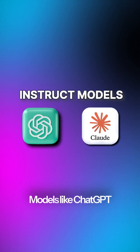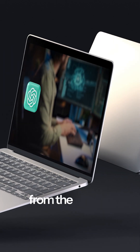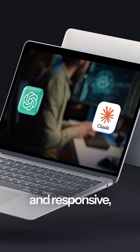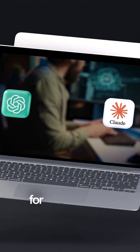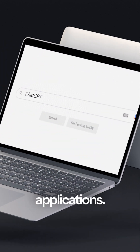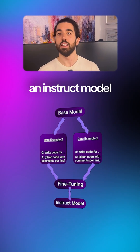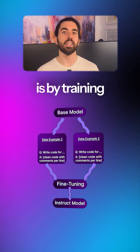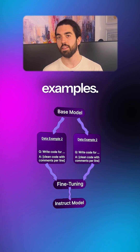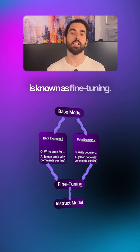Models like ChatGPT and Claude are instruct models. They are designed from the ground up to be helpful and responsive, making them essential for task-oriented applications. One way to turn a base model into an instruct model is by training it further on carefully chosen examples. This extra step is known as fine-tuning.